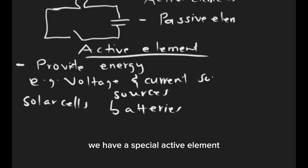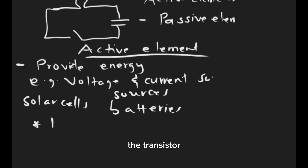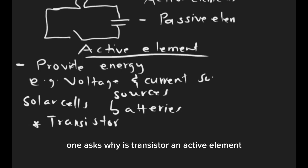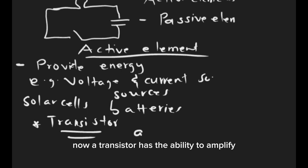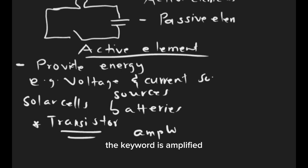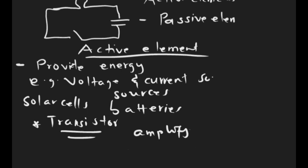We have a special active element, which is the transistor. One may ask: why is a transistor an active element? A transistor has the ability to amplify — the key word is 'amplify' — the power of a signal. For that reason, it is also termed an active element.